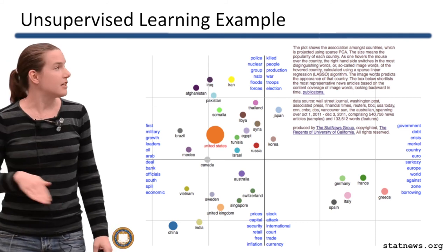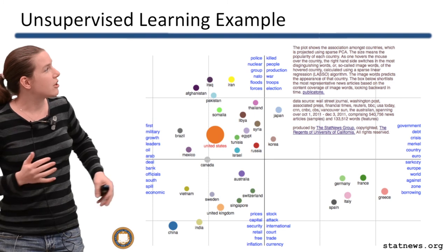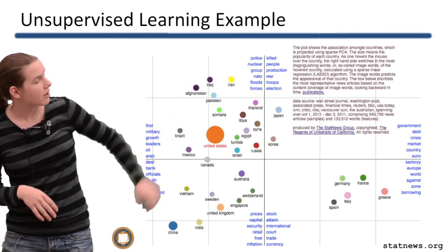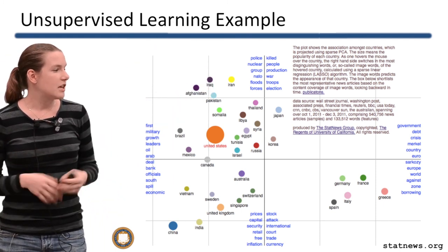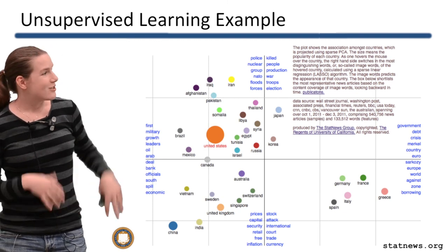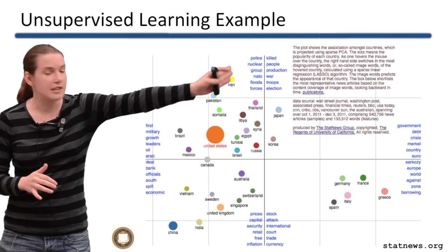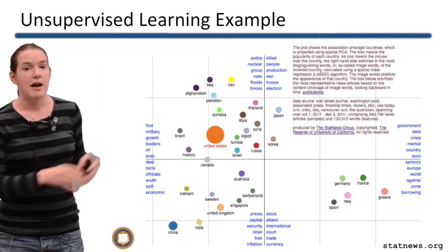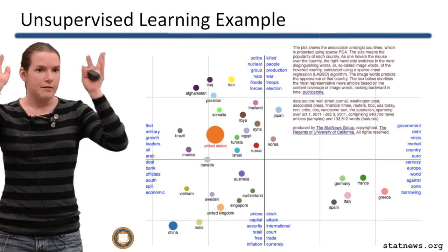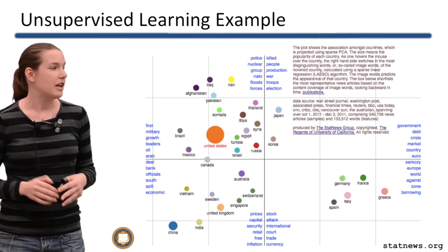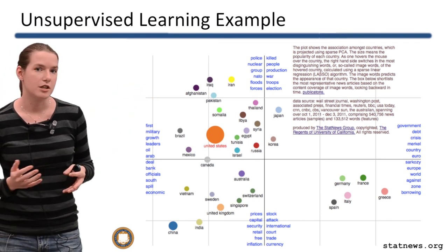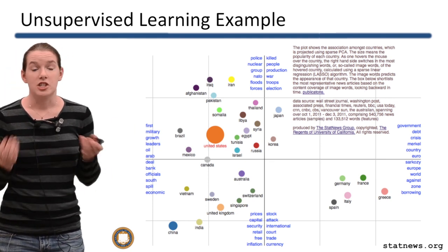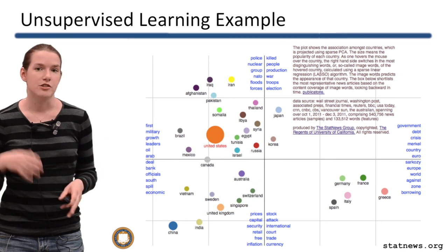On the x-axis, on one hand we have 'first, military, growth, leaders' — people are talking about those with particular sets of countries. They don't tend to say those words when talking about 'debt, crisis, Merkel, country, Europe' — that was all the European debt crisis, and you see the European countries tend to cluster over there. It found these words automatically — no one said 'I think the European debt crisis is being talked about, let me put that in.' Instead, it uncovers the biggest variations that occur in the data set. That's an example of what you might want from unsupervised learning, and it often interacts with HCI — what's the best way to represent information so that people will understand it?